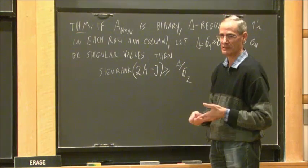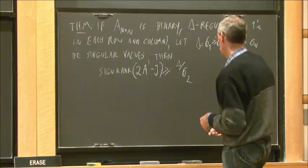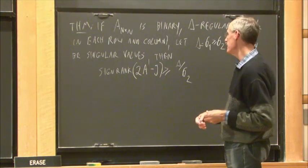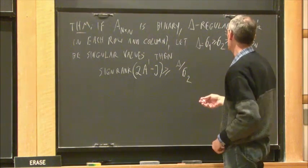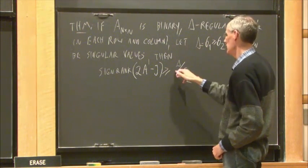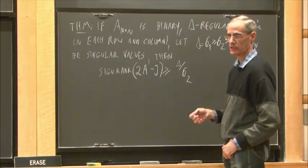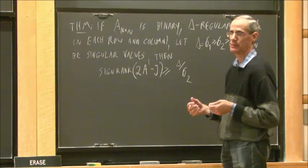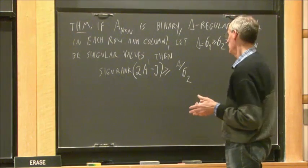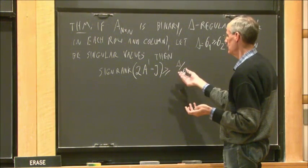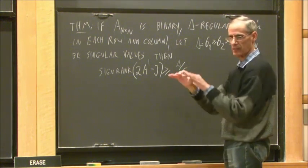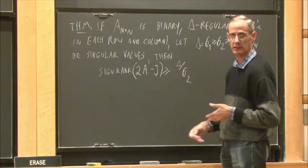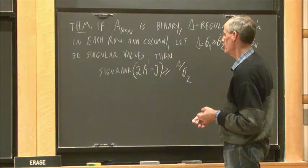The claim is that the sign rank of (2A − J) — replacing 1 by +1 and 0 by −1 — is at least δ/σ₂. We will have many examples where we have a big spectral gap, where σ₂ could be as small as essentially √δ. It cannot be significantly smaller than √δ. So whenever we take a good expander with small VC dimension, we get a reasonably big lower bound for the sign rank.